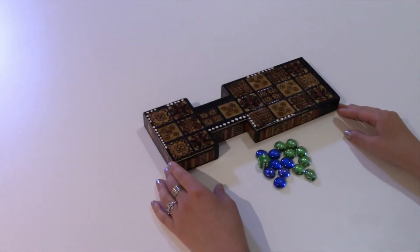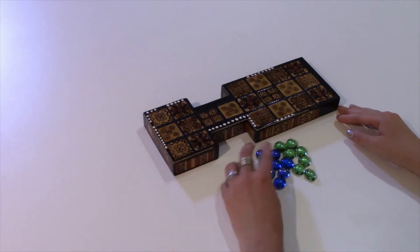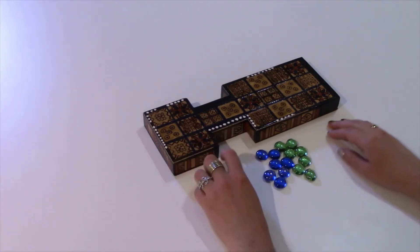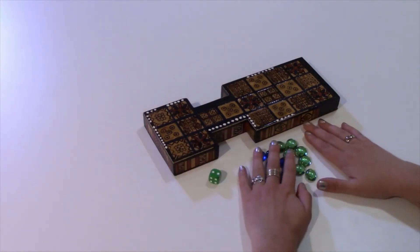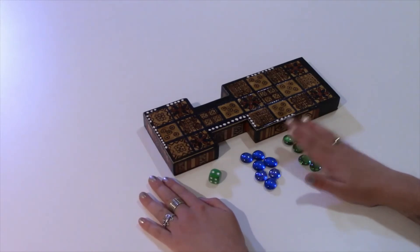Once your board is complete, grab the dice and the game tokens in your materials box. You will need 1 die and 14 game pieces, 7 blue stones and 7 green stones.